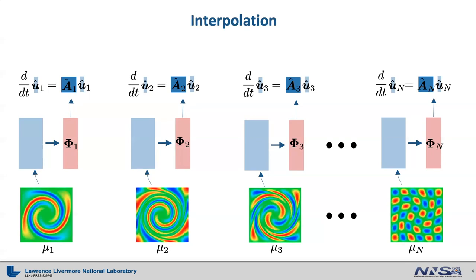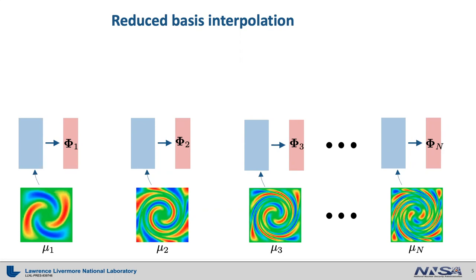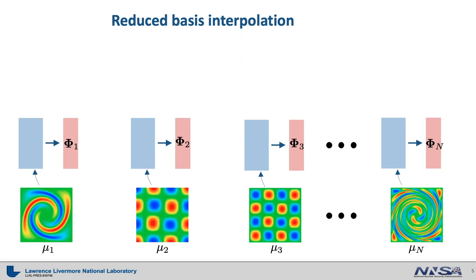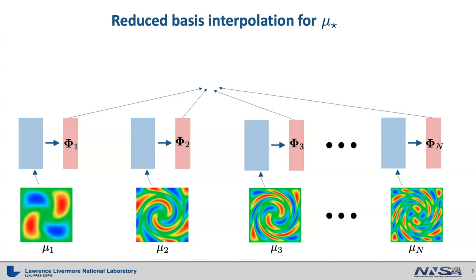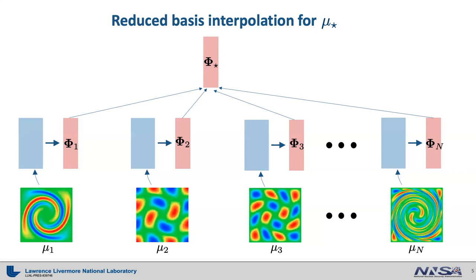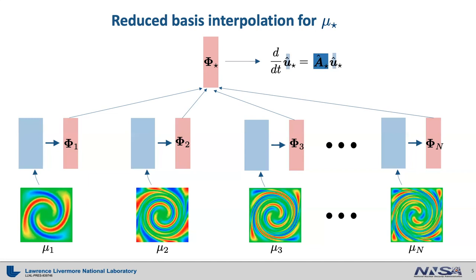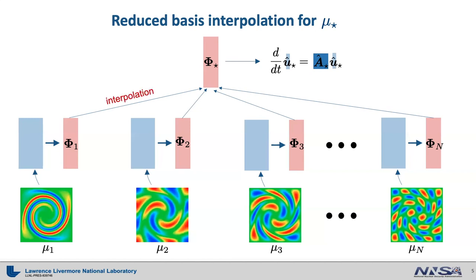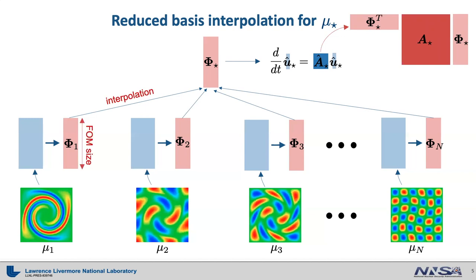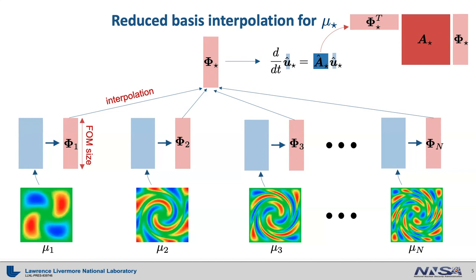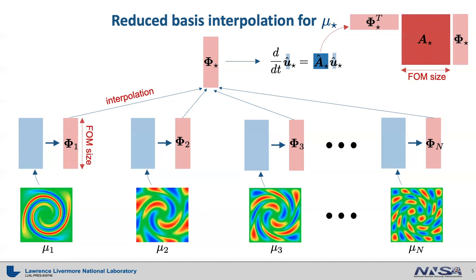We have a few choices for interpolation. The first approach is to interpolate local reduced bases before forming the local reduced system of equations. To obtain a solution for testing point mu star, one can interpolate reduced bases phi sub 1, phi sub 2, and so on up to phi sub n, to obtain an interpolated reduced basis phi sub star. Then use this interpolated basis to form a reduced system of equations. This requires two distinct steps: interpolating the bases and performing matrix-matrix multiplications to build the reduced system matrix. Unfortunately, both the interpolation and the matrix-matrix multiplication scale with the full order model size, so this can be computationally demanding.